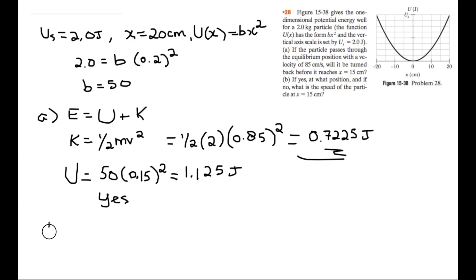So that means in part B, we're trying to find at what position is it turned back. So all we have to do is set the potential energy equal to 0.7225 and solve for x. So we have 0.7225 is equal to 50 x squared.